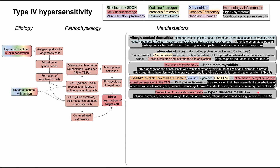Type 1 diabetes is another autoimmune reaction involving type 4 hypersensitivity. There is destruction of the pancreatic islet beta cells, which produce insulin. When these are destroyed, the patient becomes diabetic from lack of insulin. Typical symptoms are polyuria, polydipsia, and polyphagia — peeing a lot, drinking a lot, and eating a lot. Type 1 diabetes typically presents with weight loss, thin appearance, possible diabetic ketoacidosis on first presentation, fatigue, poor wound healing, and infections in more severe cases.